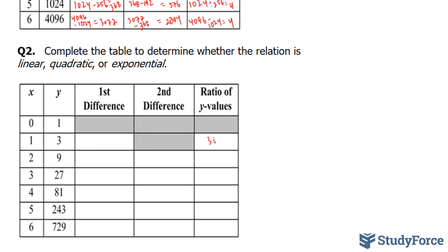So 3 divided by 1 gives us 3. 9 divided by 3 gives us 3. That's a good sign so far. 27 divided by 9, also 3. 81 divided by 27, you can bet on it, it's a 3. And 243 divided by 81 is equal to 3. And 729 divided by 243 also gives us 3. So rather than having to do the first and second differences for this table, I know that it is an exponential relationship because of the ratios of y's being all consistent.